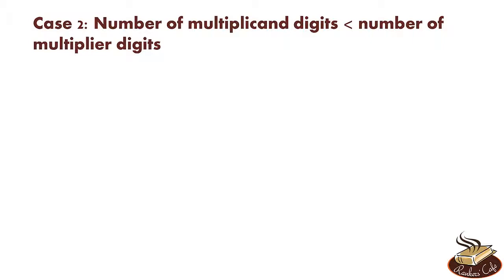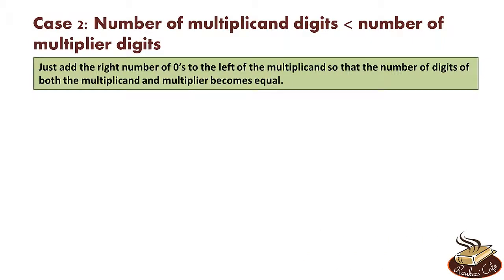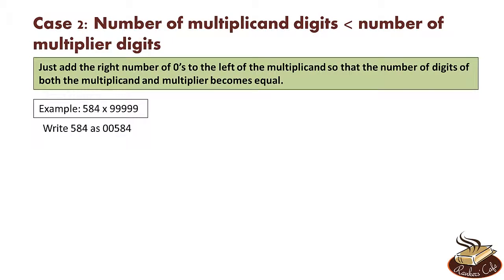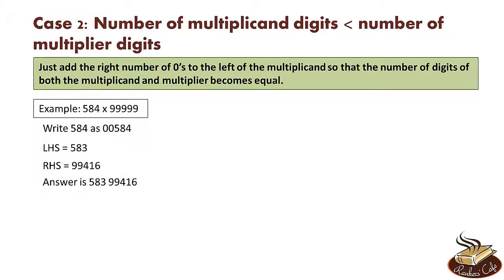Now the process to follow will remain exactly the same. The only extra thing that we have to do is add the right number of zeros to the left of the multiplicand so that their digits become equal. For example, let's say we need to find 584 into 99999. Now 99999 has 5 nines. So we add two zeros to the left of 584 so that 584 also becomes a 5 digit number. So write 584 as 00584. Now the entire process will remain the same. So LHS will be 00584 minus 1 which gives us 583. RHS is the complement of 00584. The complement of 00584 is 99416. So the answer is 583 99416.